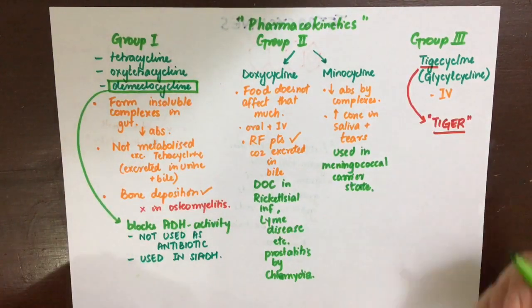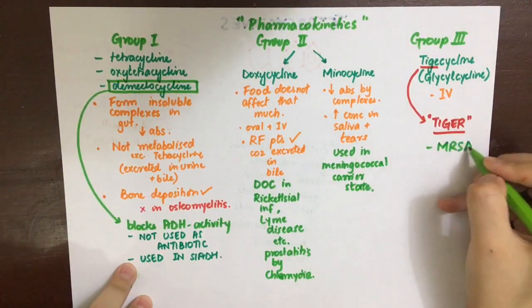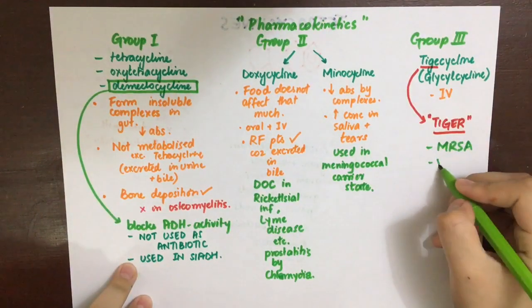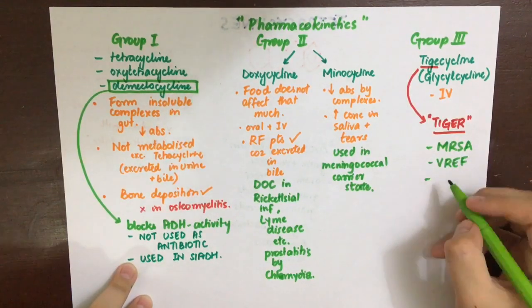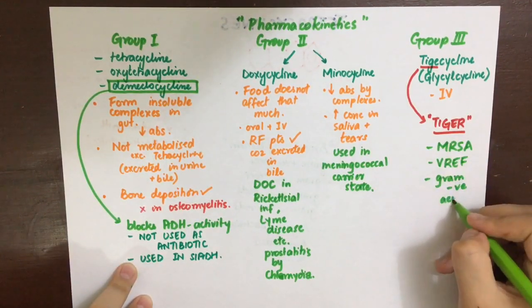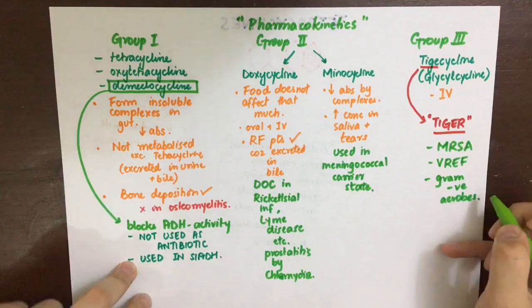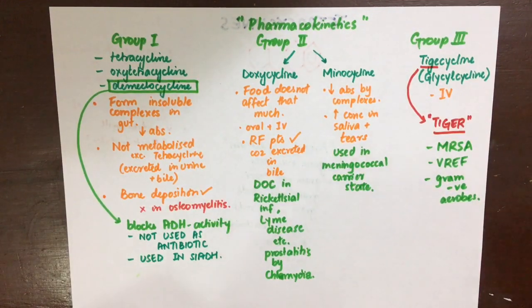Group 3 tigecycline is only administered IV. To remember its coverage, think of TIGER: it can be used against MRSA and vancomycin-resistant Enterococcus faecium, and also against gram-negative aerobes.